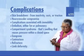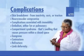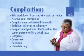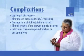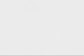It is also important to focus on prevention of complications from the fracture, surgery, casting, traction, or immobility. Possible complications include skin breakdown from inactivity, casts, or traction; neurovascular compromise; complications associated with immobility; embolism, either fat or pulmonary; compartment syndrome — swelling that causes pressure within a closed space; gangrene; contracture; refracture; limb deformity; leg length discrepancy; alteration in movement and/or sensation; damage to a joint if a joint is involved; altered growth if the growth plate is involved; and infection from a compound fracture or postoperatively.